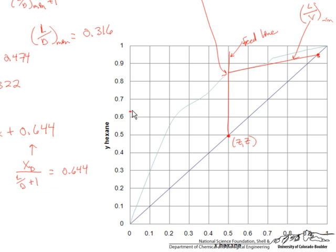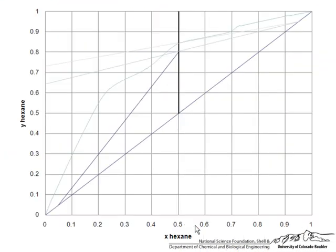So let's plot this top operating line. The Y intercept is 0.644 and plot this and then we will plot the bottom operating line. It goes through XBXB and the intersection of the top operating line and the feed looks like that. And let's go to the next page where we have this already plotted. This is our top operating line and this is our bottom operating line.